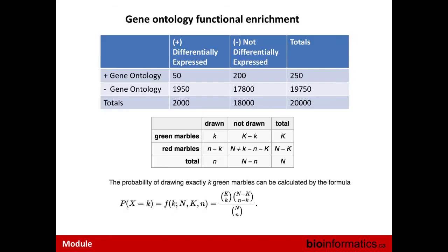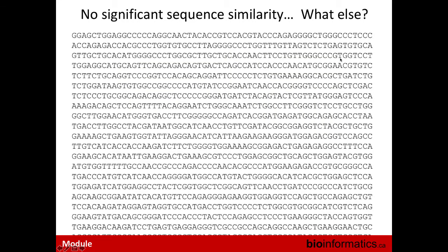In the case of SwissProt, if you have a match to a SwissProt protein and that protein record has certain gene ontology terms, you can basically apply those terms transitively to your transcript or protein of interest. It's a nice, easy way to capture gene ontology terms for your transcripts if you have homology. But if you don't have significant sequence homology from your BLAST search, what else can you do?